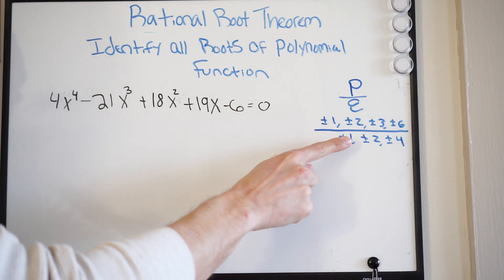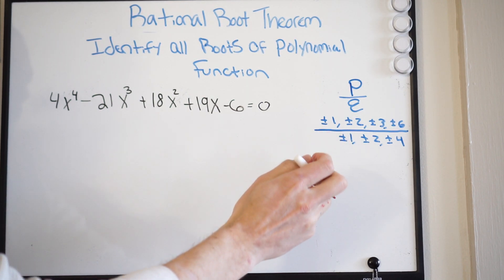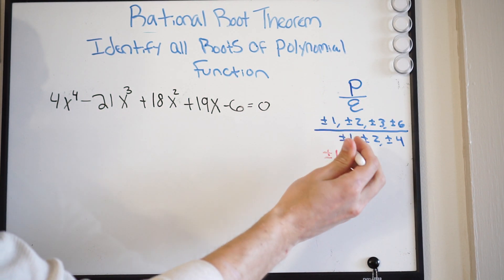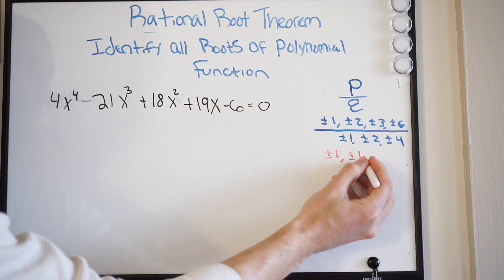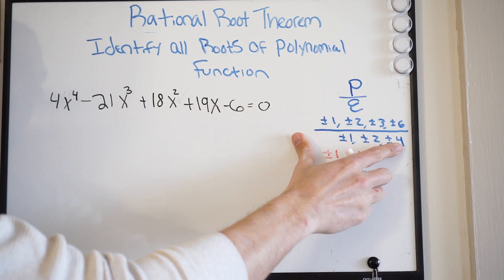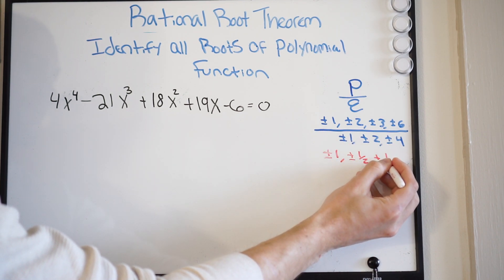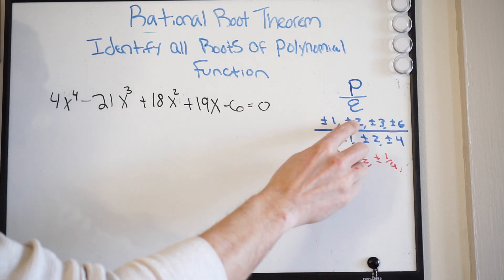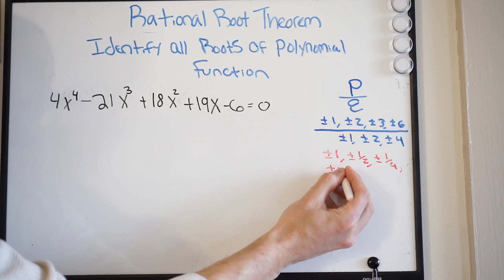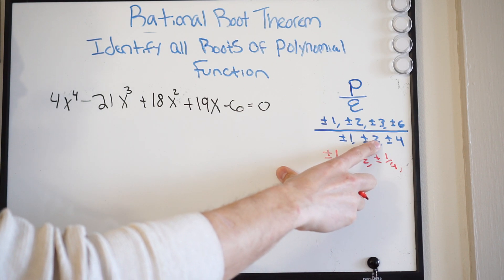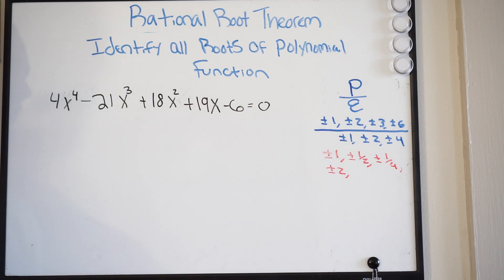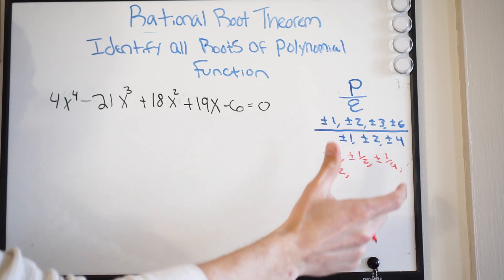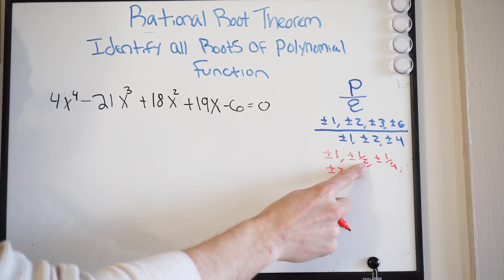So my constant factors are going to be plus or minus 1, plus or minus 2, plus or minus 3, and plus or minus 6. And then we need to write out the factors of my leading coefficient, which are going to be plus or minus 1, plus or minus 2, plus or minus 4. Then we actually have to go ahead and do this operation out for each one. Starting at 1: 1 divided by 1 is plus or minus 1; 1 divided by 2 is plus or minus 1/2; 1 divided by 4 is plus or minus 1/4. Moving on to 2: 2 divided by 1 is plus or minus 2; 2 divided by 2 is plus or minus 1, which we already have; 2 divided by 4 reduces to 1/2, which we already have.